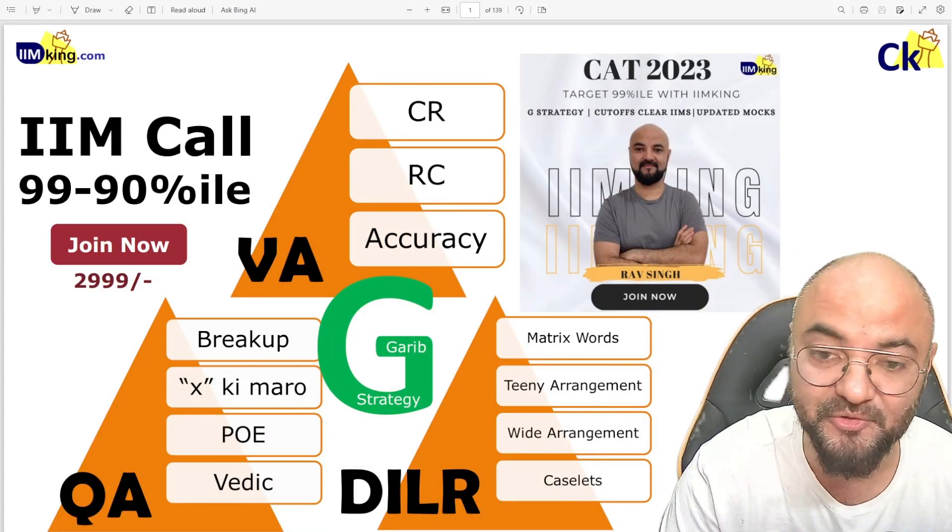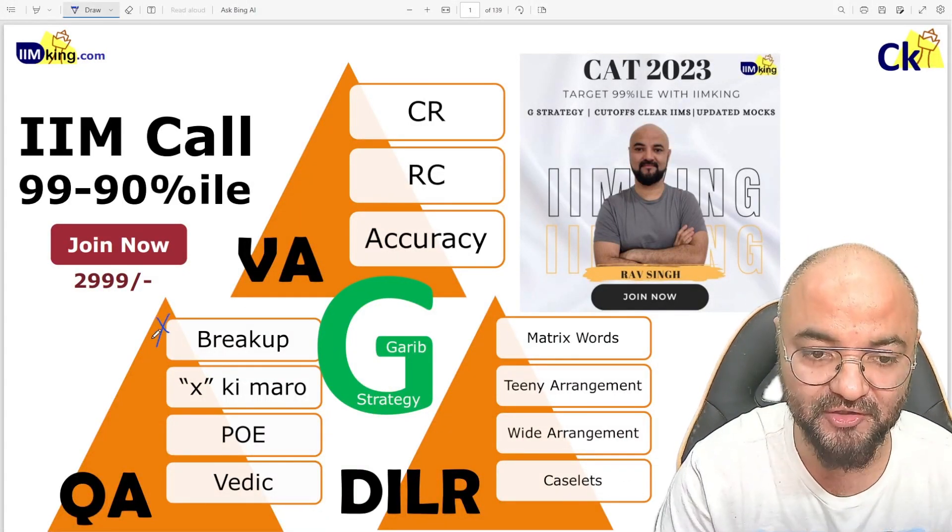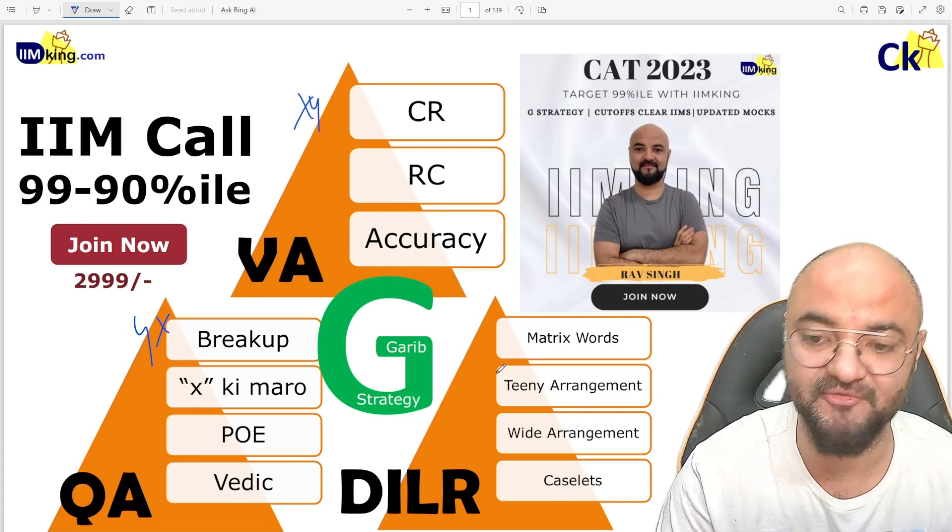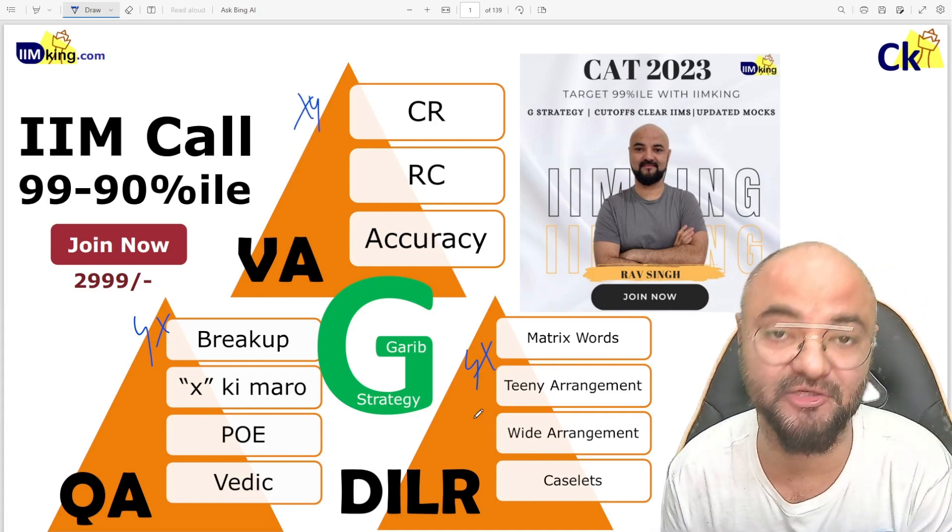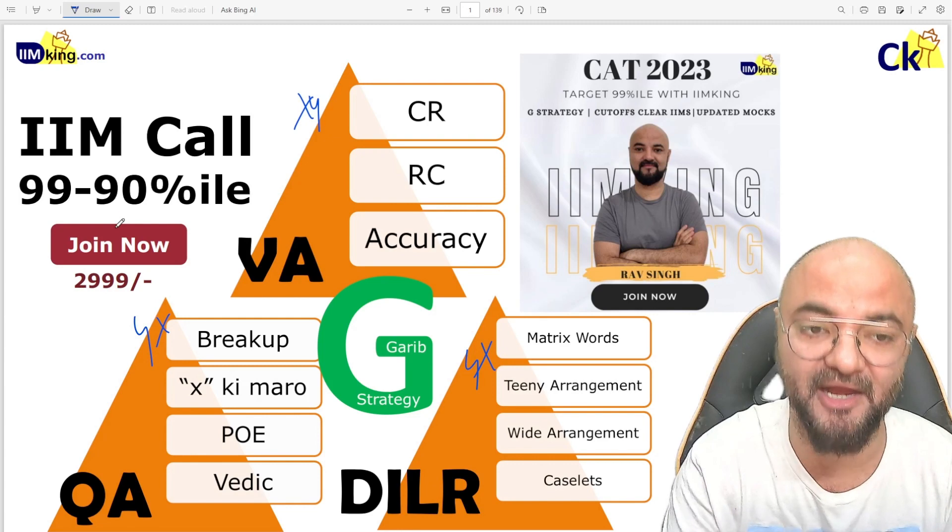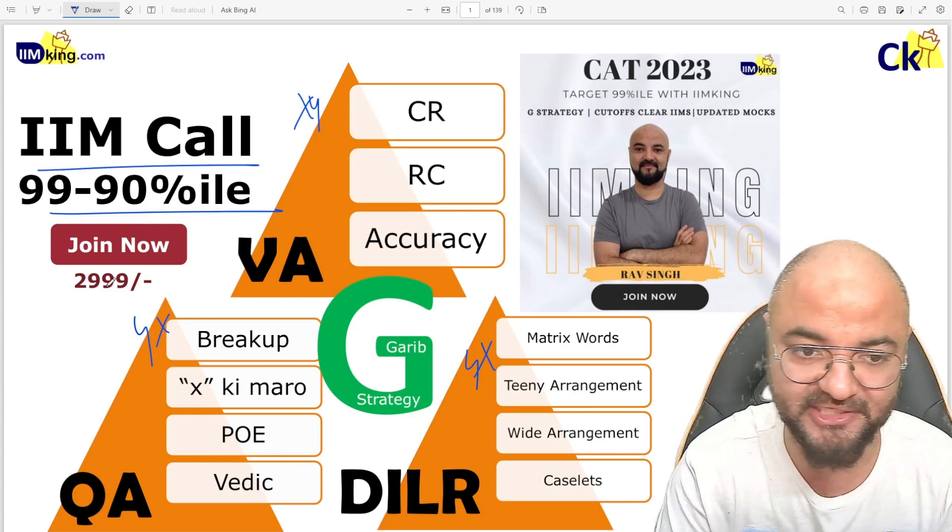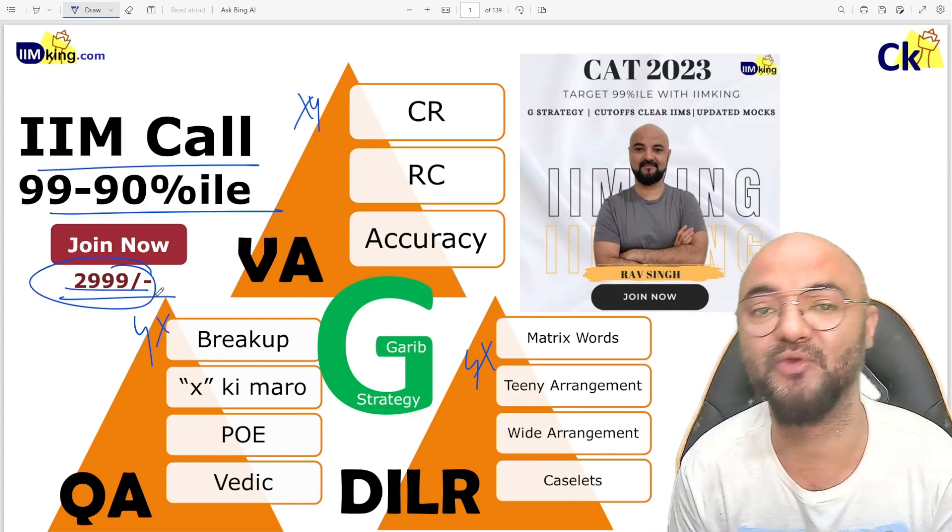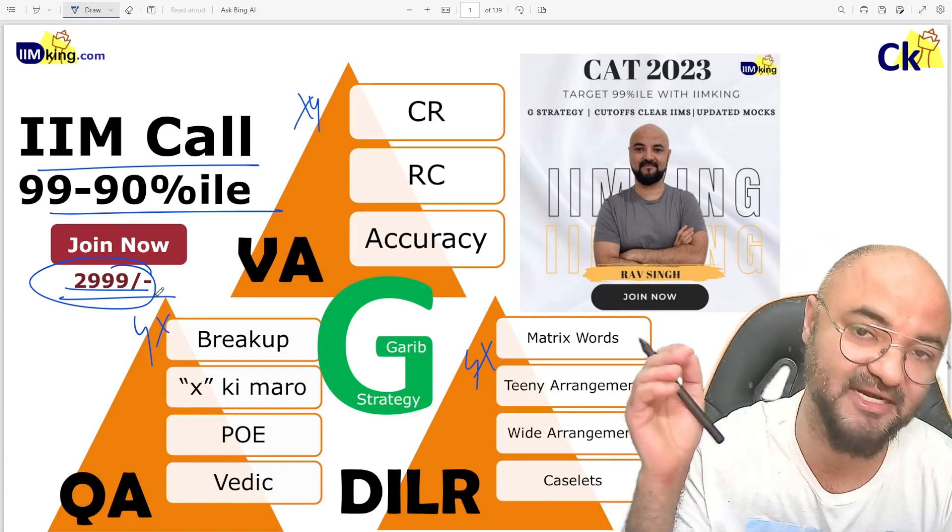Let's get this IIM call by using G Strategy. There are four workshops in quant, four workshops in verbal, and four workshops in DI logic, which is good enough to clear the IIM call and get 90 to 99 percentile. In case you want to join, the fee is only 299. Link is in the description box.